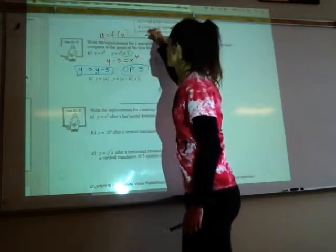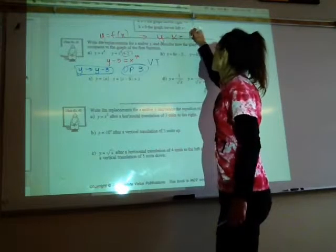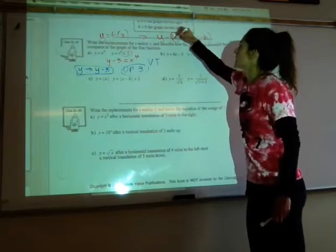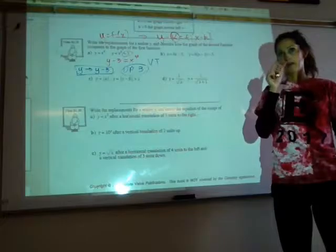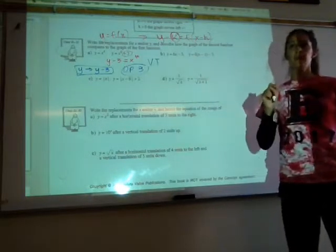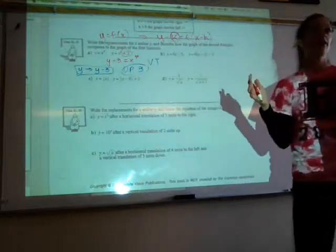and we looked at our new notation, y minus k is equal to f of x minus h, what number did we sub in for k? Was it a positive or negative 3? Positive 3. So if k is positive, we move up. So be very careful when you're rearranging that equation how you're interpreting it.